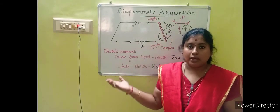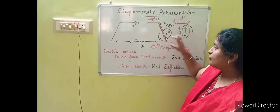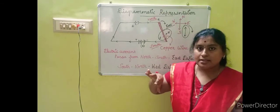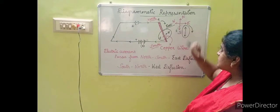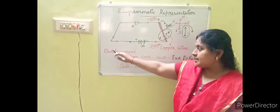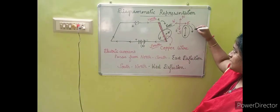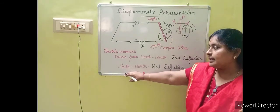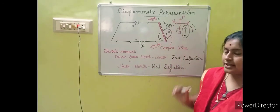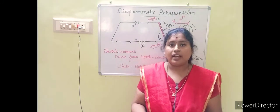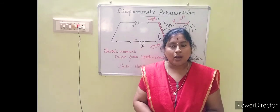In the second case, if the current flows from the south end to the north end, the deflection will be in the opposite direction — towards the west. So, if the electric current passes from north to south there is an east deflection, and if current passes from south to north the deflection is towards the west side. From this deflection we can identify the direction of the current flowing in the copper wire.